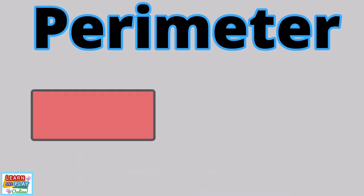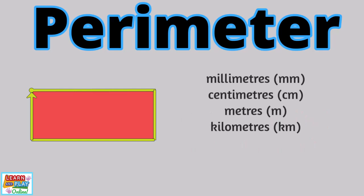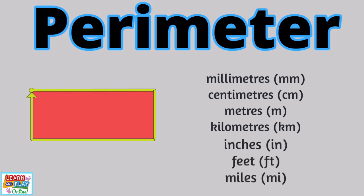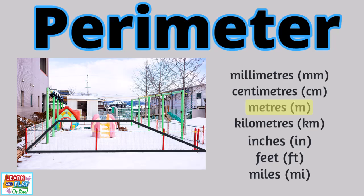When calculating and talking about perimeter, it is important to state the unit of measurement being used. There are many units of measurement that can be used to measure length and distance. Some units include millimeters, centimeters, meters and kilometers, as well as inches, feet and miles. The reason why it is crucial that we state the unit of measurement is to make sure we are measuring perimeter using the same unit. If we go back to our playground example, 50 meters of fencing is very different to 50 kilometers of fencing. Knowing the unit of measurement being used helps us to stay on the same page and be as accurate with our measurements as possible.